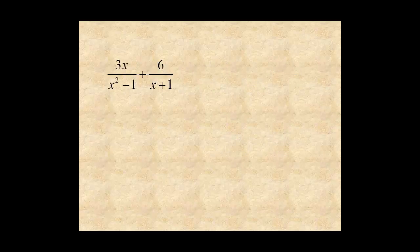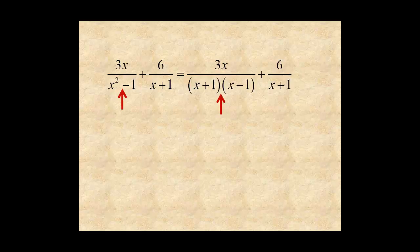Add these expressions in the same way. Factor the first denominator. x squared minus 1 is the difference of squares, so it factors into x plus 1 times x minus 1. Now notice the two denominators share a common factor of x plus 1.